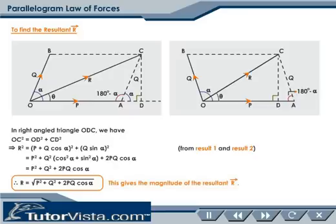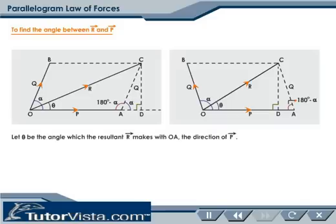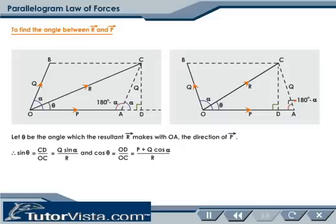To find the angle between R and P, let theta be the angle which the resultant R makes with OA in the direction of P. Therefore, sin theta equals Q sin alpha divided by R, and cos theta equals P plus Q cos alpha divided by R. The value of theta which satisfies these two equations gives the angle between R and P.